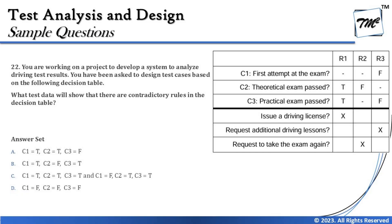Moving to option C, we have two sub-options: True, True, True and False, True, True. Both can only fit into R1, where the bottom two conditions are true and the first can be anything. Even with true or false for C1, this does not contradict R2 or R3. Both sub-options produce the same result without contradiction with any other rule, so option C is also not the answer.